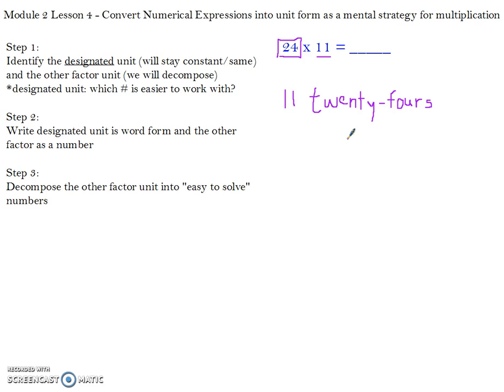The next step, step 3, is to decompose the other factor unit into easy-to-solve numbers. What that means is numbers that are easy to work with for you. There's many different ways that you can do this and many different numbers you can choose. It's all up to what is easiest for you in your learning. The number that I'm going to break up is the number 11. And for me, the easy-to-use or easy-to-solve numbers for 11 would be 10 and 1.